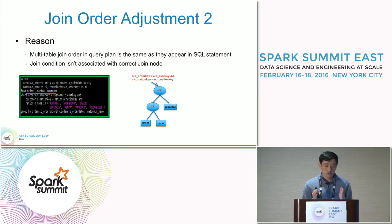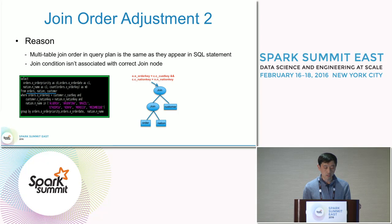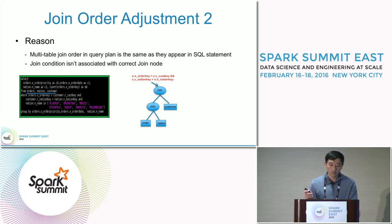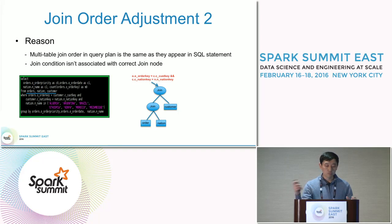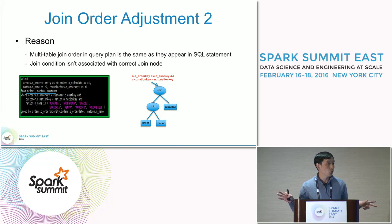But looking at the predicates highlighted in red, if we split them into conjunctives, the first condition has attributes from the orders table and the customer table. For the top join node, this equality condition can match because O is a subset of the lower join node's output and C_customer_key is a subset of the customer table. However, in the second condition, the left side is from the customer table but the right side is from the nation table. This condition cannot be pushed down to the lower join node because the orders table and customer table belong to different join relations.